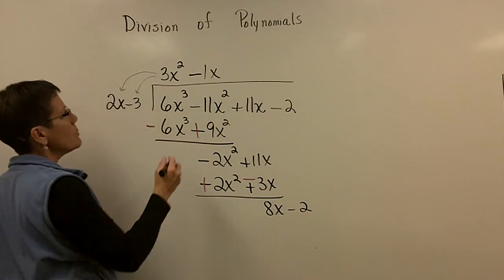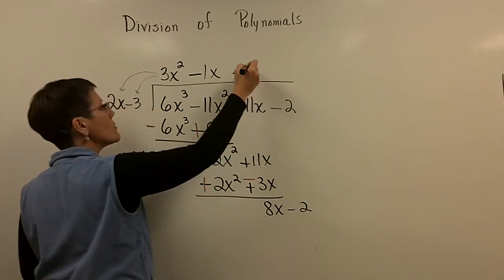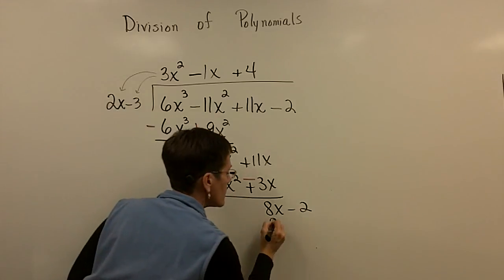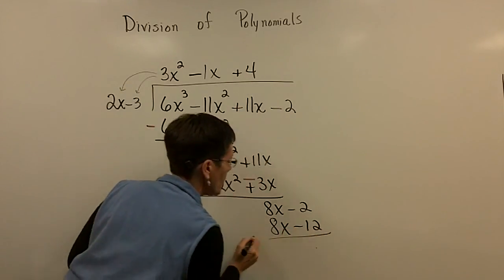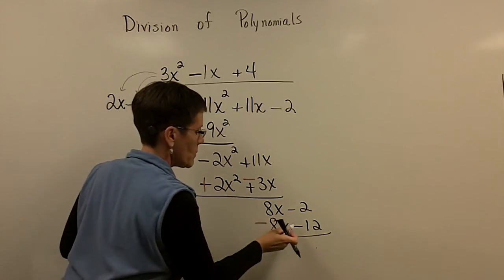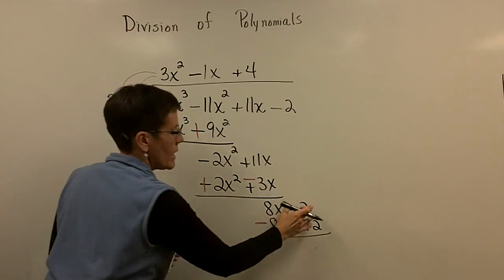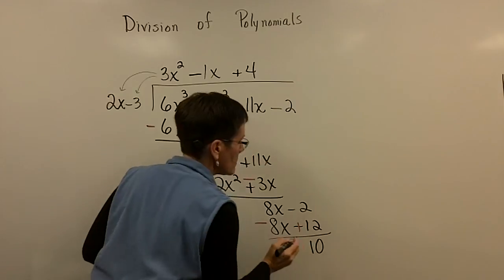And finally, I need to put a 4 right here because 4 times 2x is 8x. And 4 times a minus 3 is a minus 12. And now I'm going to change my signs and change my signs. And my remainder here for this problem is a 10.